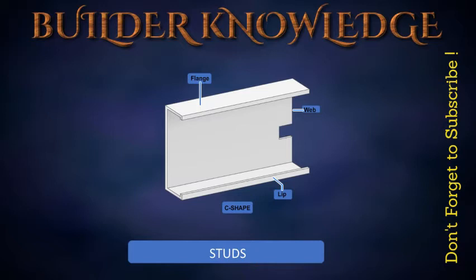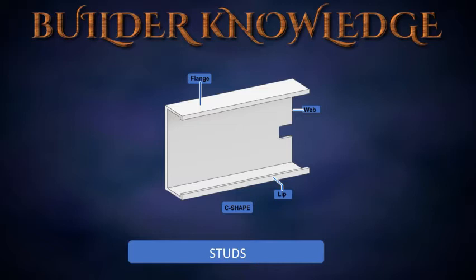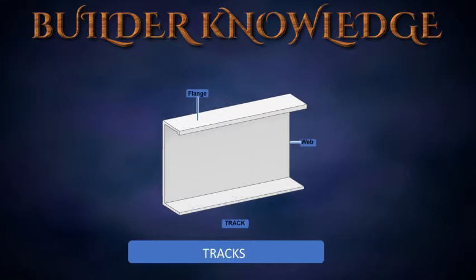Studs are also used as joists for floors and ceilings. They are C-shaped and have a web depth from one and five-eighths inches to twelve inches. Flanges stiffen the web and provide surfaces for attaching sheathing. Lips extend from flanges on the open side and stiffen the flanges.